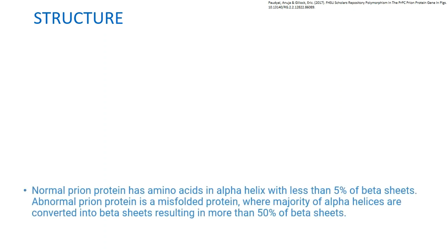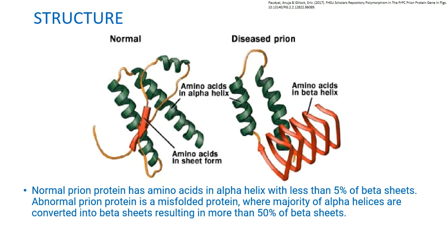Coming to the structure: a normal prion protein has amino acids in alpha helix configuration with less than 5% beta sheets. As seen in the diagram, there is more alpha helix compared to beta sheet. An abnormal or misfolded prion protein, on the other hand, has more beta helix than alpha helix — more than 50% of the protein is composed of beta helix.